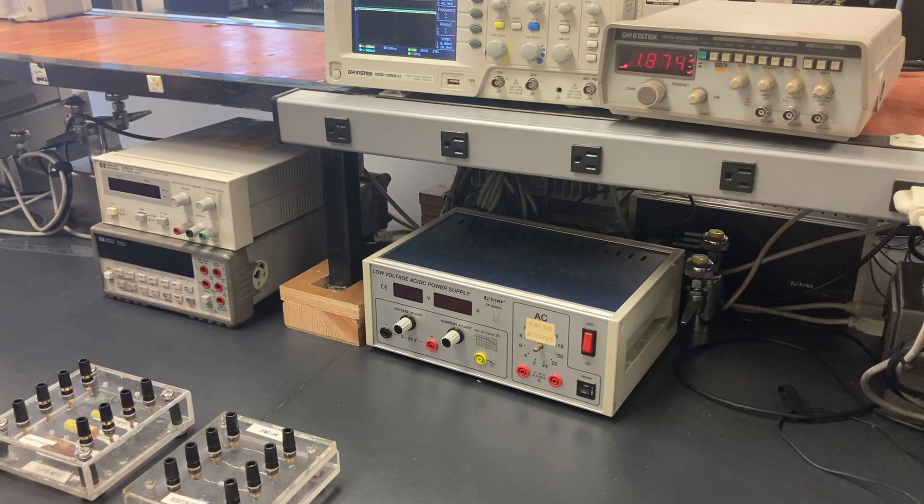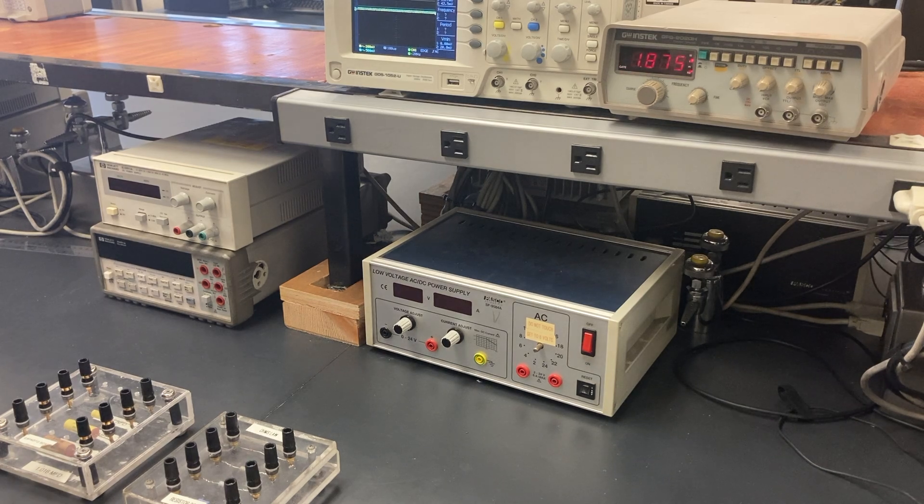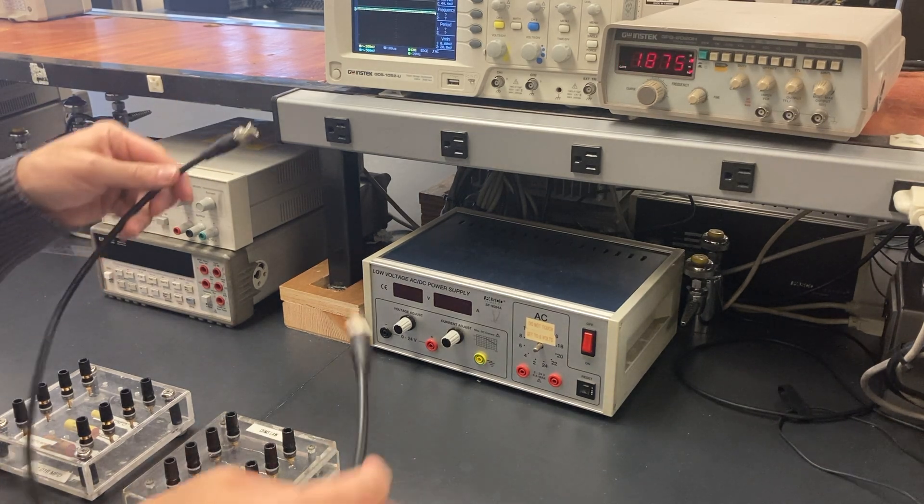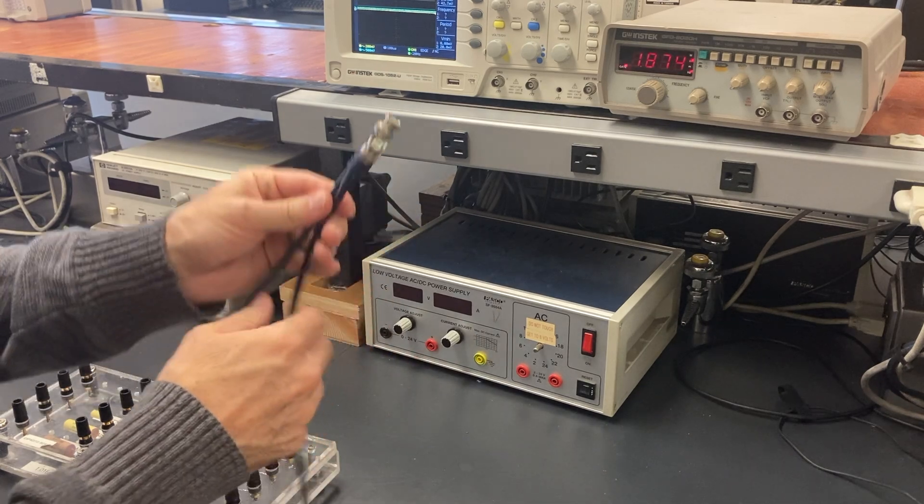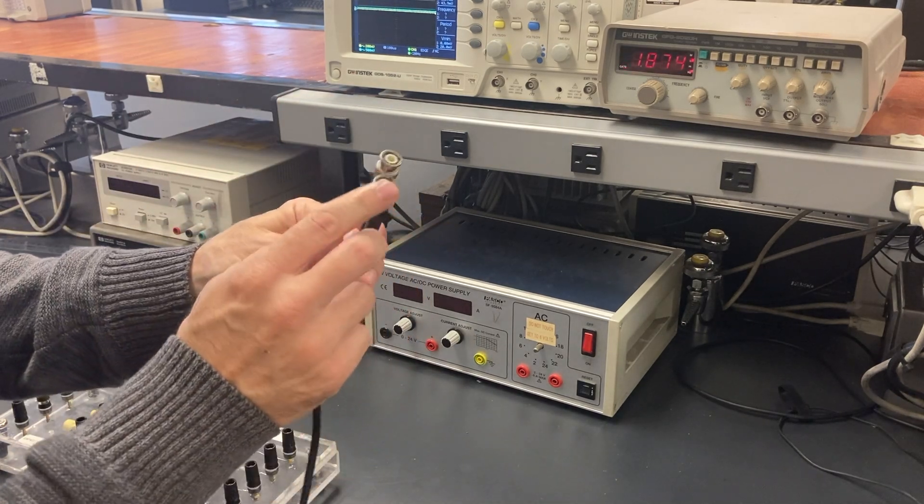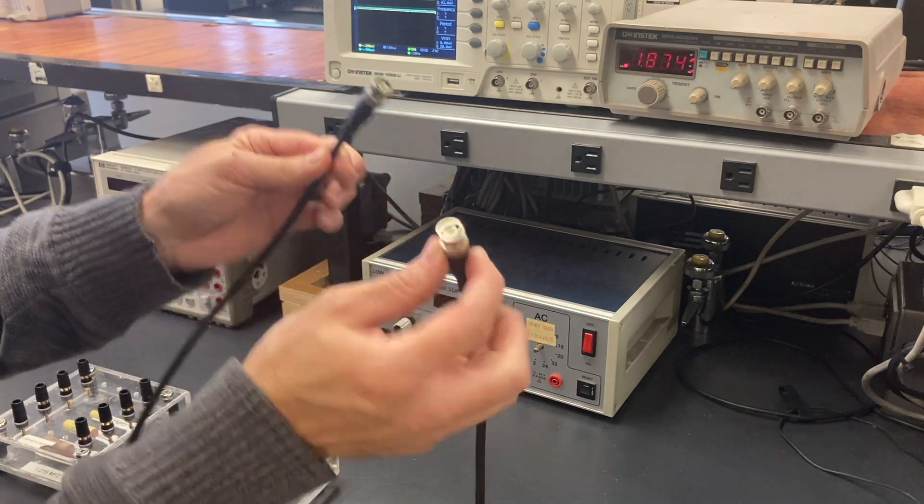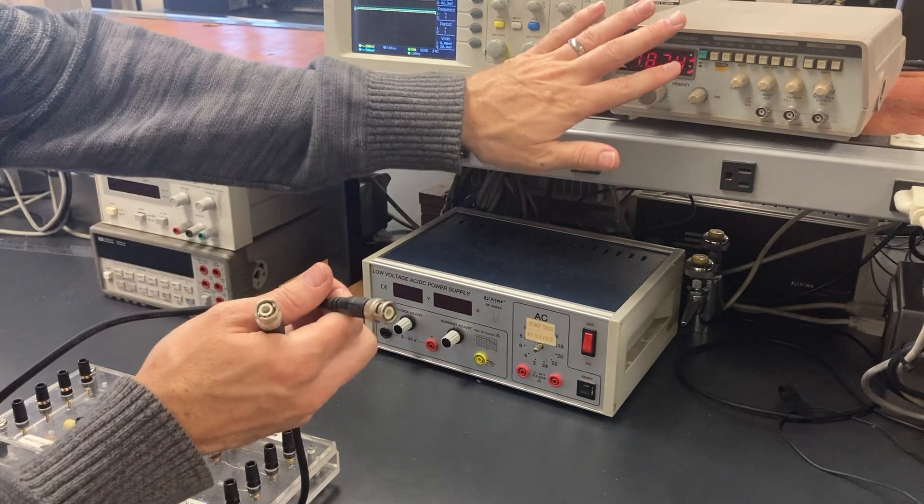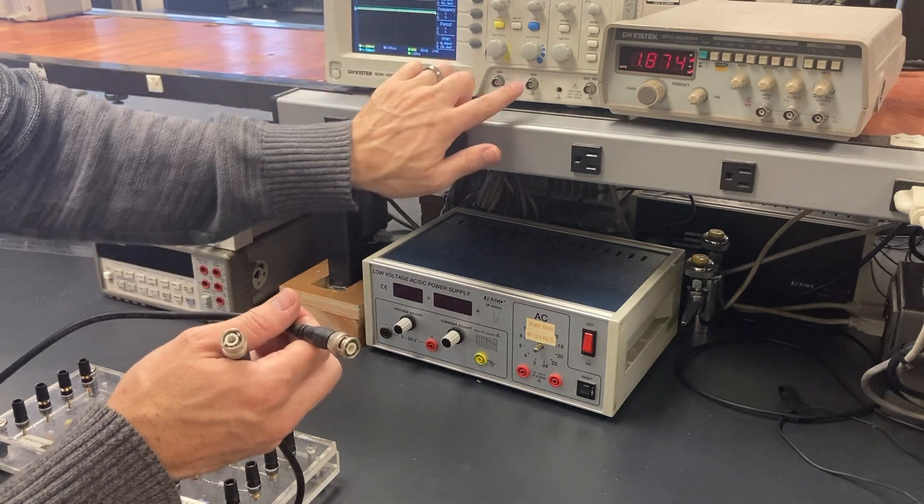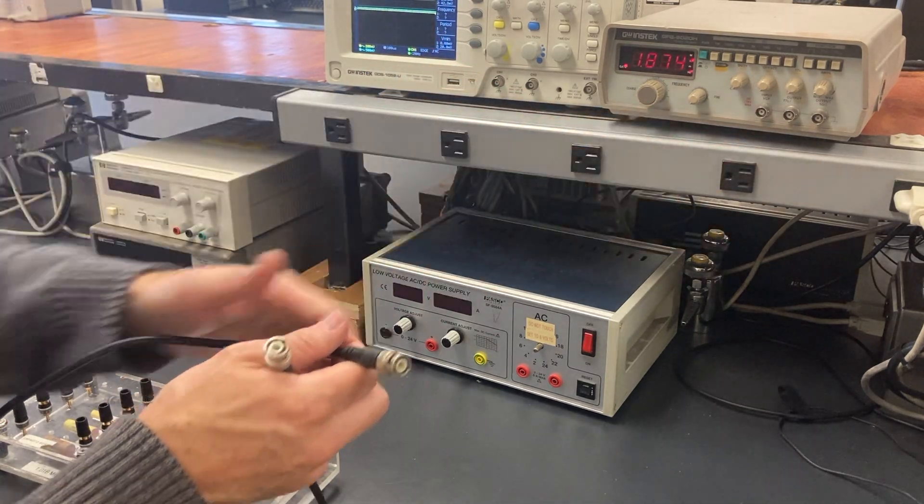Before we can do that, we need to look at the cables we're going to use to connect everything together. We've got these BNC cables that we use to connect instruments to each other. There are actually two wires: there's a pin on the center and then there's a cylindrical conductor on the outside, and we can connect them to the function generator and an oscilloscope by connecting to these terminals.